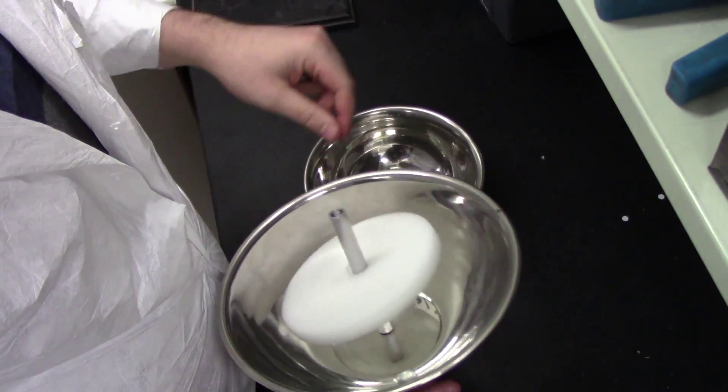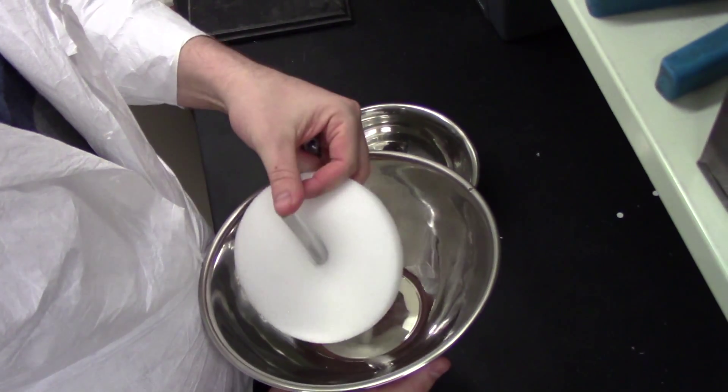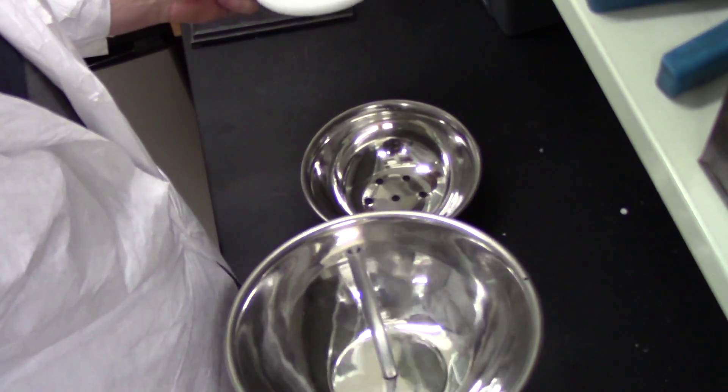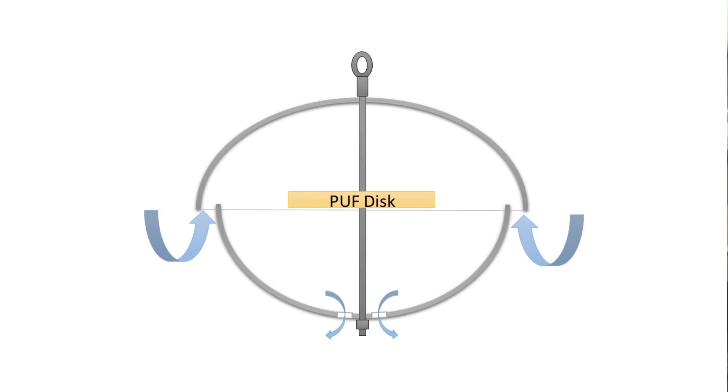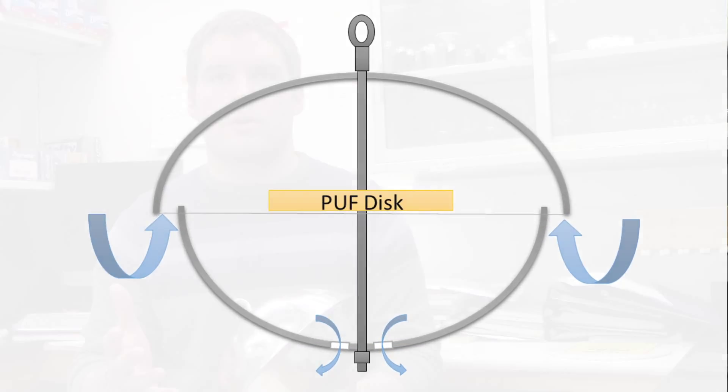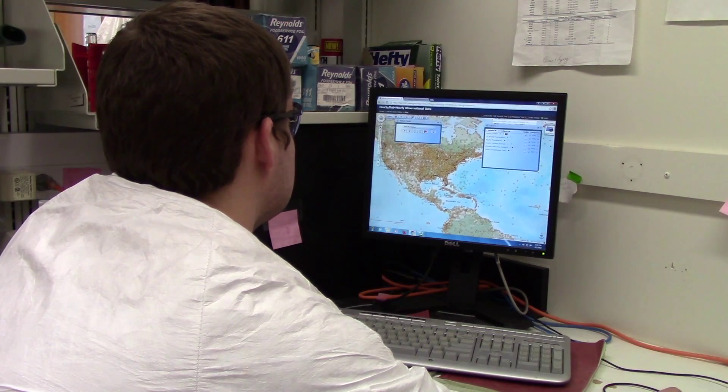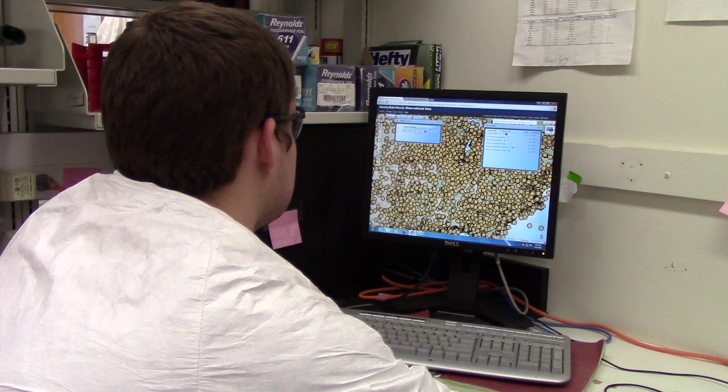The passive sampler we use is a design created by a group in Canada. They used a metal housing, and inside the metal housing they used a polyurethane foam disc to uptake the contaminants of concern. One of the drawbacks of using passive sampling methods is you don't have a controlled flow rate. The sampler is designed to have air flow in the sides and then out the bottom, and that flow rate is hard to determine for passive sampling because there's nothing measuring it.